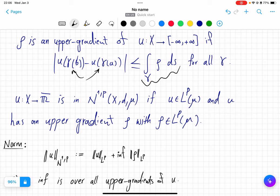Based on this, we called a function u, a measurable function u, in the space N^{1,p}.